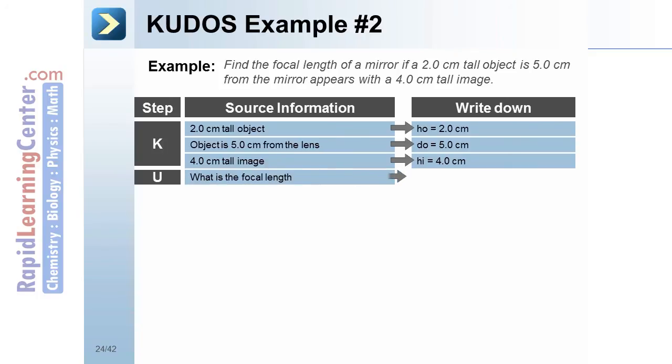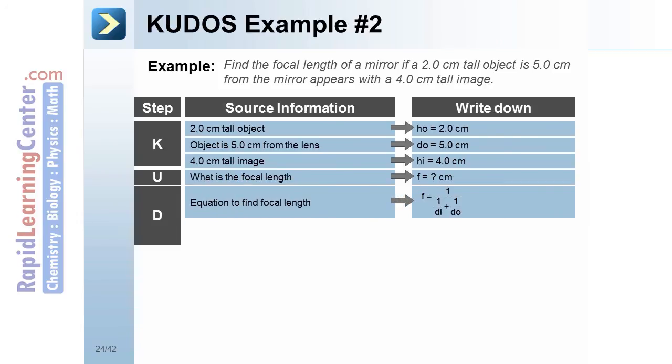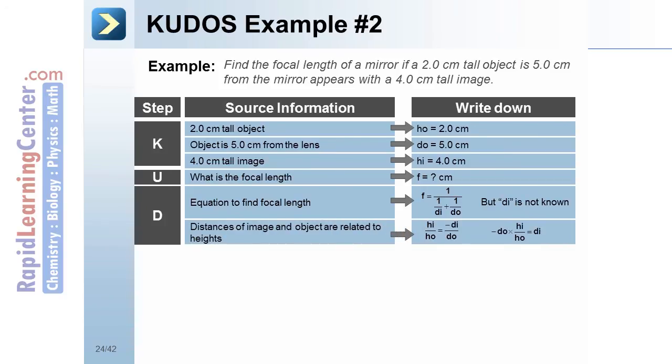The unknown. We are looking for a focal length, F, which would be in centimeters. The definition. We might use our focal length equation or lens equation. We also might use our magnification or height of an object and image equation.